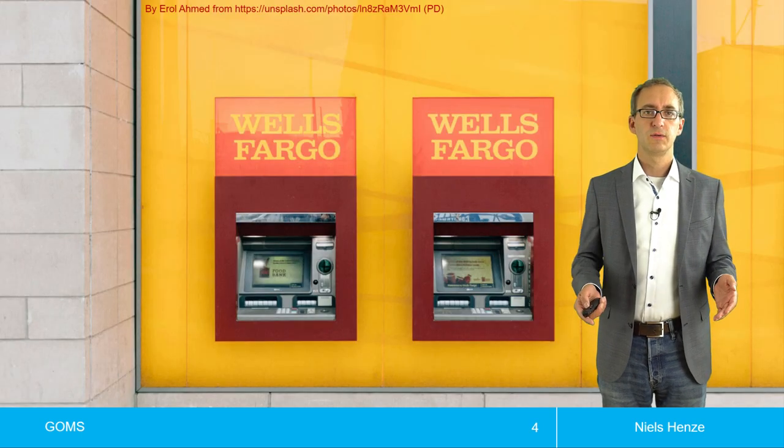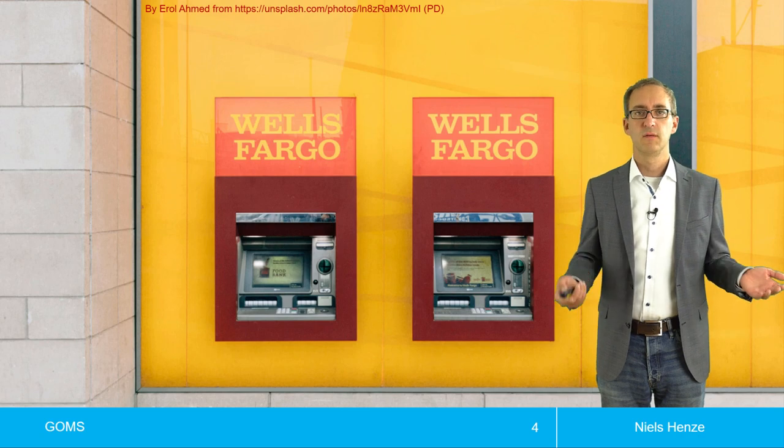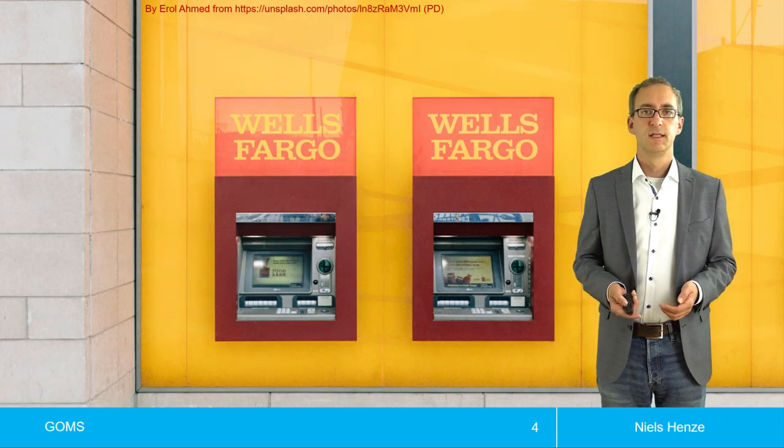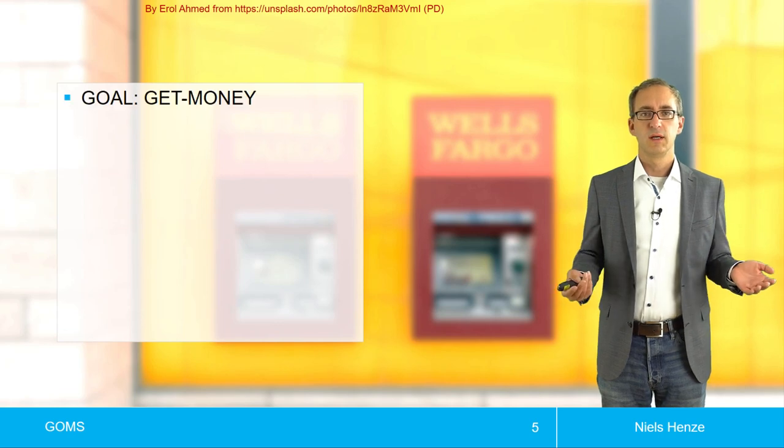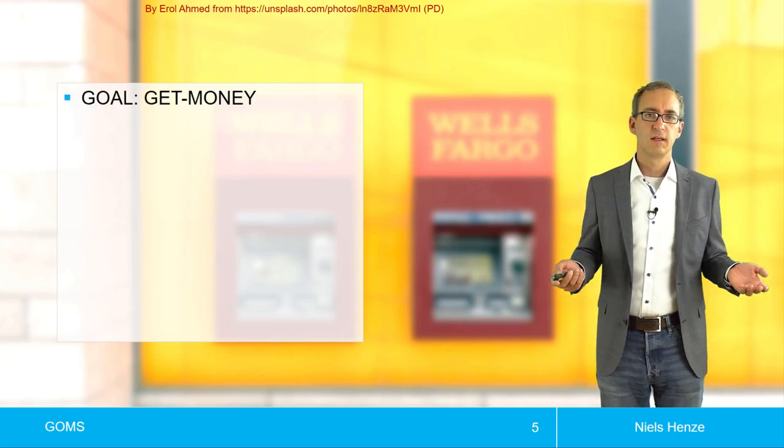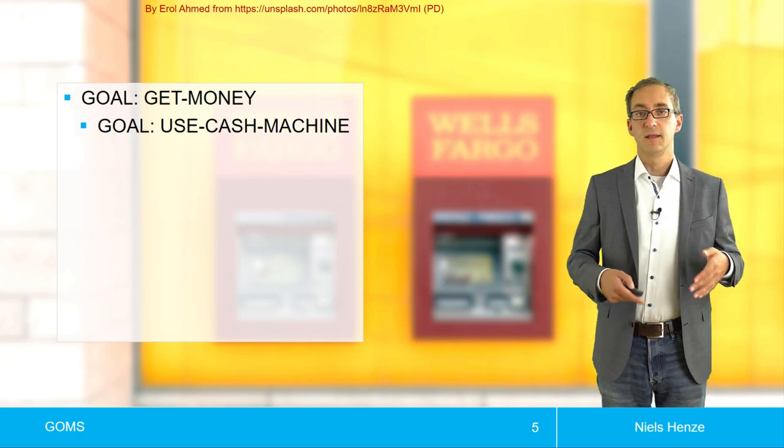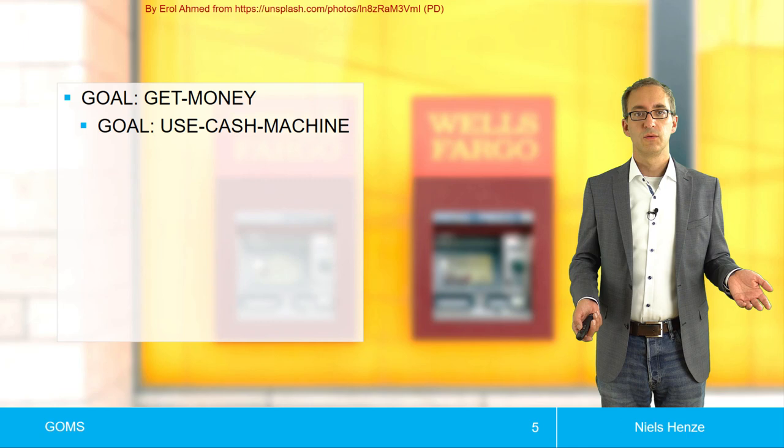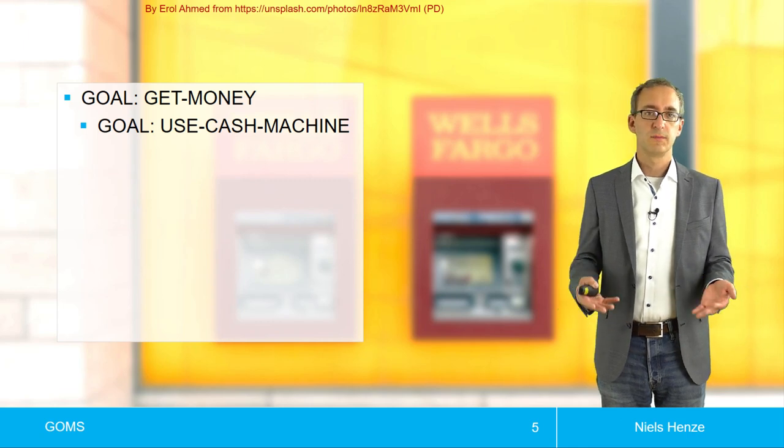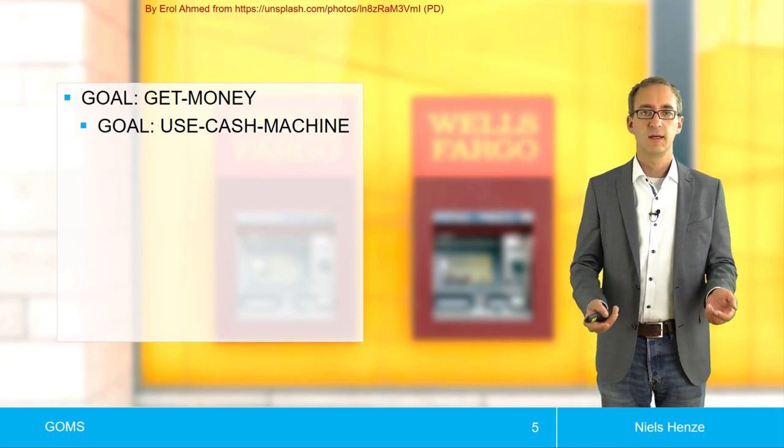But let's look at an example of the plain or CMN GOMS. Let's assume I would like to get cash, and I would like to use a cash machine for that. So how does this process look like? Well, my goal is I want to get cash. And then I decide I would like to use a cash machine. And then the cash machine guides me through a process.